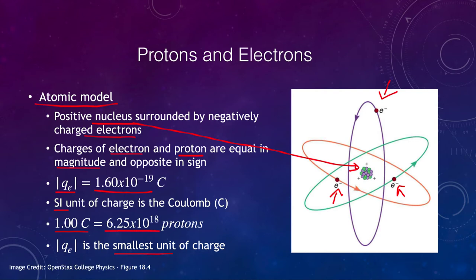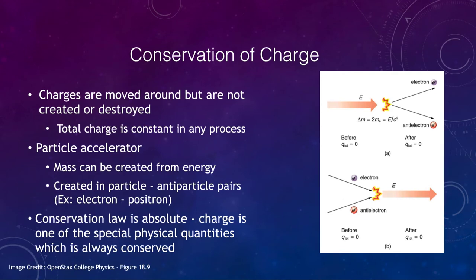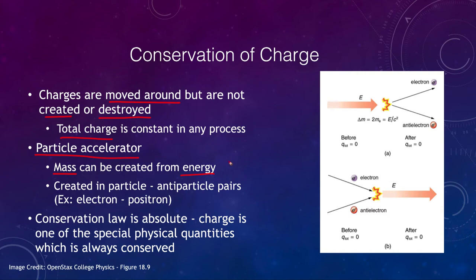Let's look at conservation of charge. Is charge conserved? We find that charges can be moved around — electrons can move — but they are neither created nor destroyed. So the total charge in any process is going to be constant. We'll see some of that when we come to chemistry in the second part of this class.